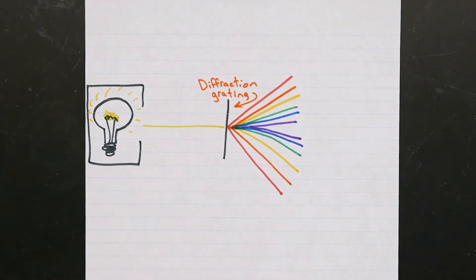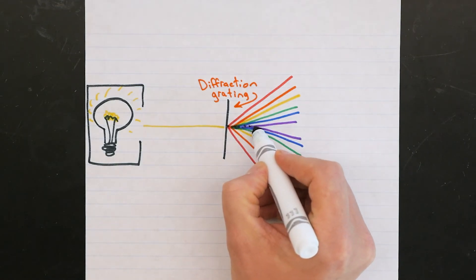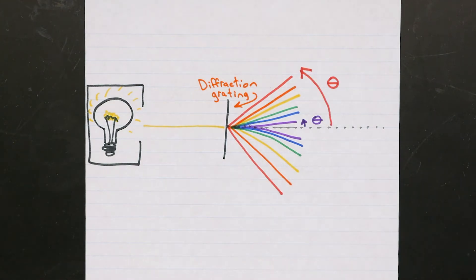Photons of different wavelengths are bent by different amounts as they pass through the grating. Red is bent more than purple, and this allows us to identify exactly which colors were present in the original light beam, because each would be found at a specific diffraction angle.